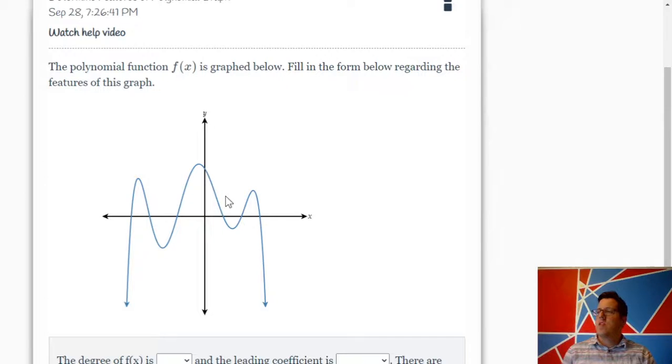So I'm going to tell you some things that I notice about it. Its end behavior is pointing down in both directions. It's not symmetrical about the y-axis, because this relative maximum isn't lying on the axis, and these two points are not at the same height, and neither are these two points.